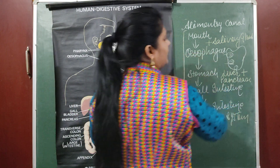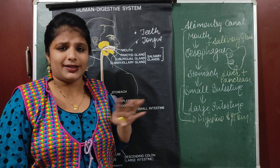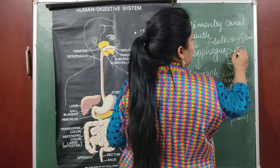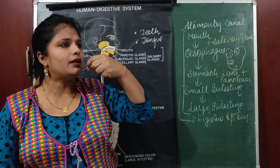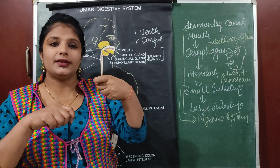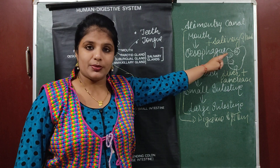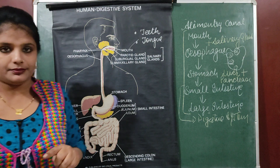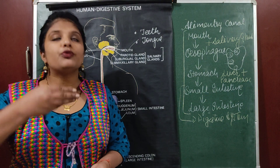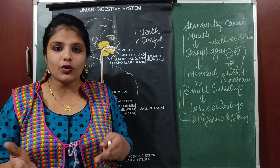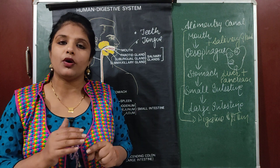Then we have salt taste buds so we can detect salty taste. At the end of the tongue we have taste buds for bitter taste. When you eat medicine and keep the tablet on your tongue you don't immediately know it's bitter — only when you swallow it. That's because the bitter taste buds are at the posterior part of the tongue. The second function of the tongue is to swallow the food — without a tongue we cannot swallow food.